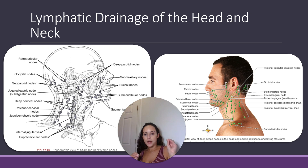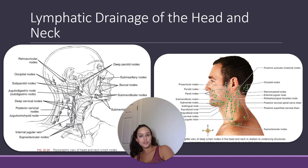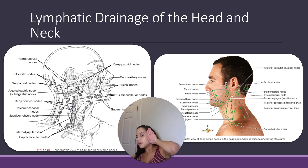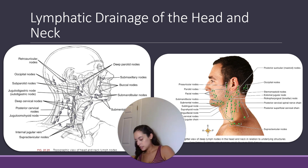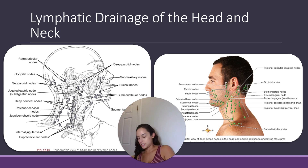Next, you have the deep parotid lymph nodes, which are very easy to identify because they are inside your actual parotid gland — ingrained in there. In this image, the parotid gland is flipped up so you can see them. The other part of the parotid nodes are called the subparotid nodes, which are not within the gland but deep to the gland. That's why it is lifted up like a flap in the image.